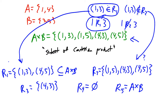Everything else we talk about in this lesson is going to stem from this definition. Every time you have a relation on two sets, what you have is a bunch of ordered pairs where the first element is from the left-hand side and the second element is from the right-hand side. You may or may not have all of them — usually you don't. It's the exception rather than the rule to have the entire Cartesian product as we had with R5.